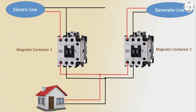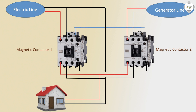Electric line neutral common to magnetic contact same connection — NC, NO connection to NC connection short. Magnetic contact one A2 connection to NC, magnetic contact two NO connection magnetic contact one to A2 connection NC2. Connection to magnetic contact two coil A1 — same A1 coil connection to NO connection magnetic contact two, or electric line.